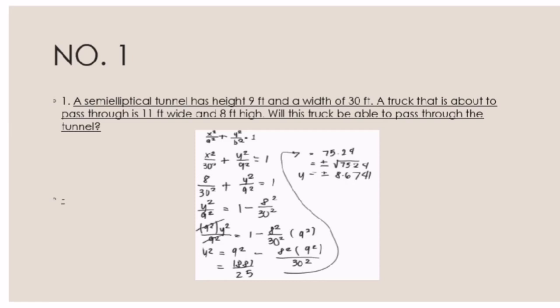Calculating it using the scientific calculator, it will become 1,881 over 25, which equals 75.24. The square root of 75.24 is approximately 8.6741. So, will this truck be able to pass through the tunnel? Yes, it will be able to pass through the tunnel.